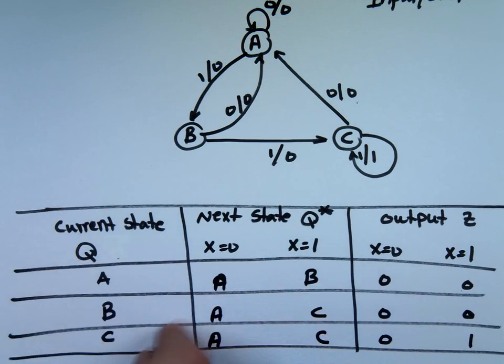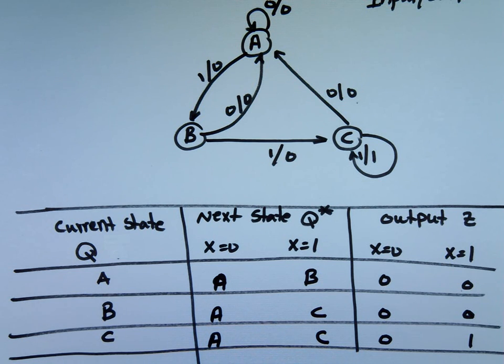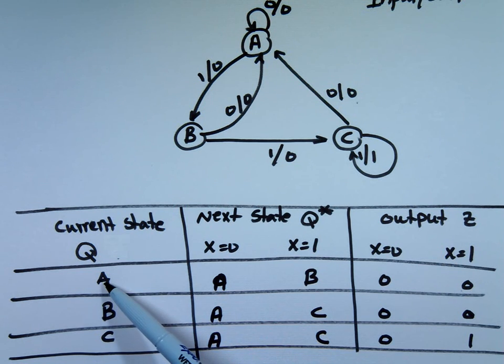State table, state diagram. Two different ways to write them. They represent the same thing. So notice again, I'm trying to emphasize, your output, your next state depends on where you are, the current state, and also on the input itself. Is it 0 or 1?